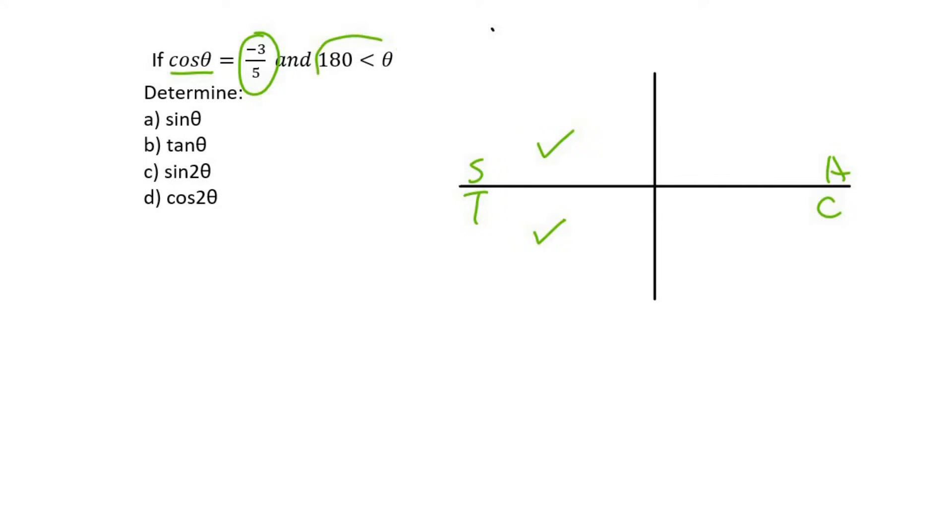Then they said that theta is bigger than 180. So bigger than 180 could be this one or this one. We choose the quadrant that offers both conditions, and that is where we will draw our triangle. It'll go like that and then like that, and this is the angle we'll use as our reference.